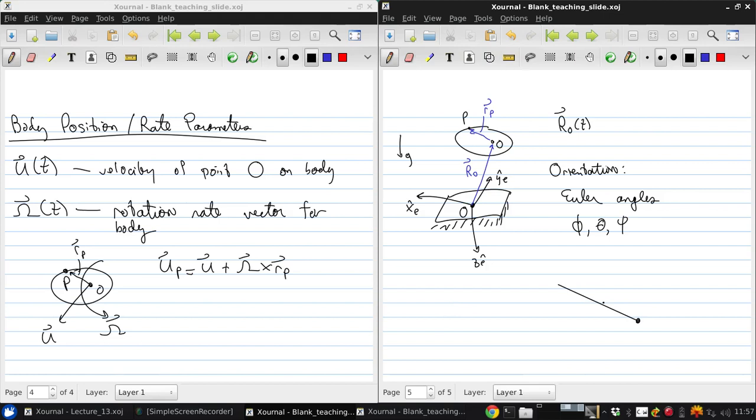We start with some origin. Here's our original earth x-axis. Psi defines a rotation within the XE, YE plane and gives us a new axis. Then the theta gives us a rotation up out of that plane, and that defines the X body axis. But then there can be a rotation about that axis which is specified by phi.